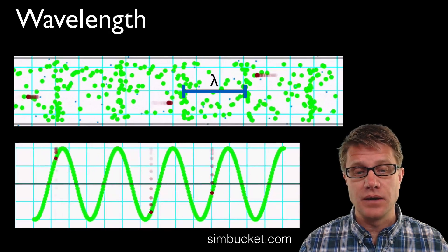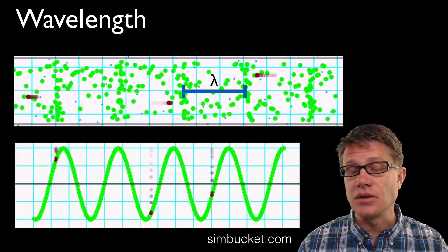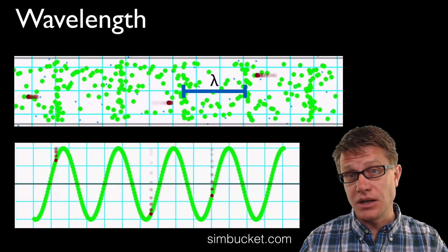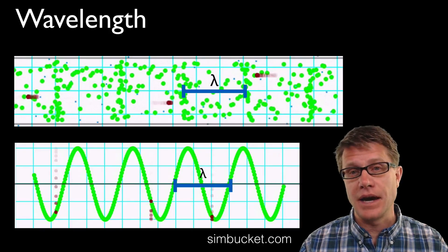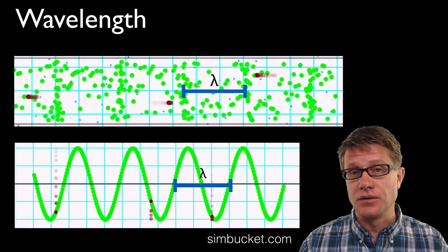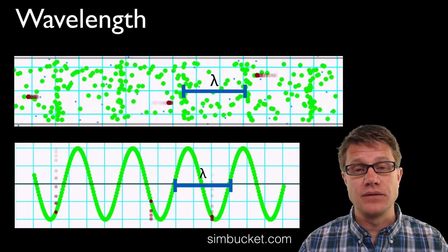If we look at transverse waves, now you can see that those particles are oscillating perpendicular to the motion of the wave. Where would one wavelength be now? Like that. But we could have equally measured the crests or the troughs of the waves as well.